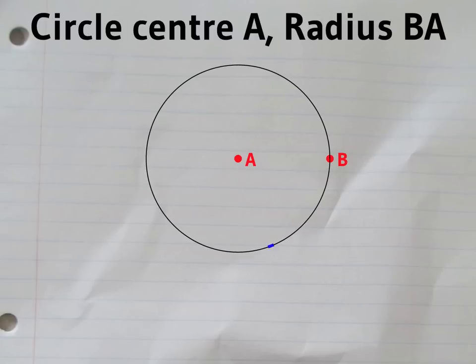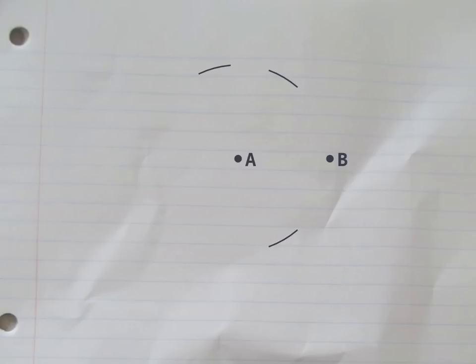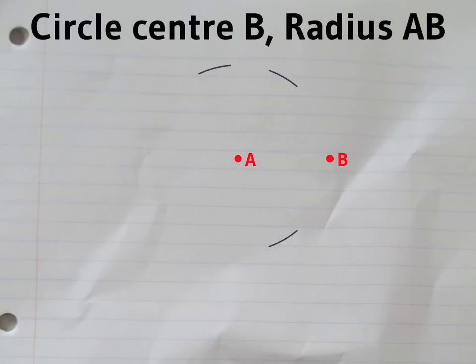Start by drawing a circle with centre A, radius AB. Then you draw a circle with the same radius, centred on B.